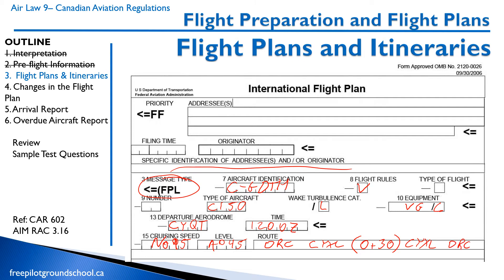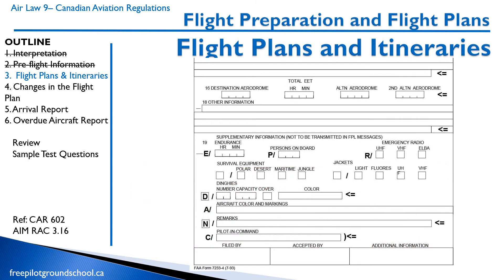We're going to go direct to Winnipeg. Here's the second half of the flight plan — the lower half. Destination: Winnipeg, CYWG. Total estimated time en route is the total length of the flight including all stopovers. Let's say it takes three hours to fly to Winnipeg with a half-hour stopover — that's three hours 30 minutes. Alternate aerodrome we don't need to worry about because that's for IFR. Endurance: let's call it four hours. We have two people on board, no emergency radio, but we have polar survival equipment. No life jackets, no dinghies. Aircraft color is white.